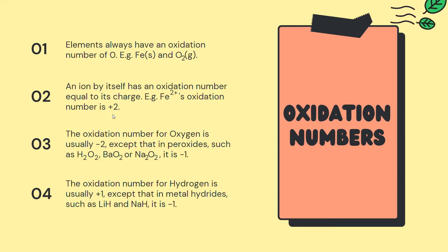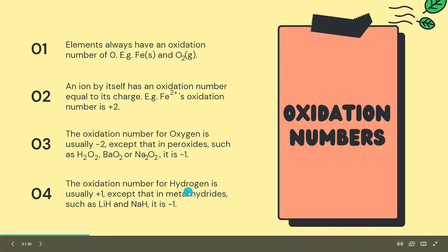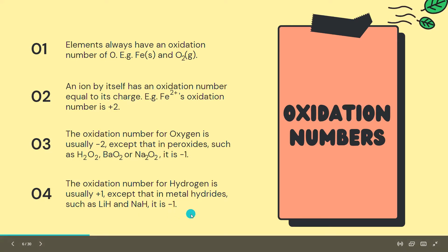Third, the oxidation number for oxygen is usually negative 2, except in peroxides such as hydrogen peroxide, barium peroxide, or sodium peroxide, where it is negative 1. Fourth, the oxidation number for hydrogen is usually plus 1, except in metal hydrides, where it is negative 1.